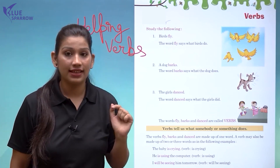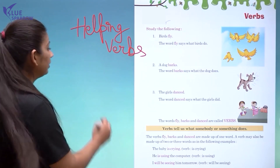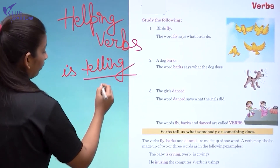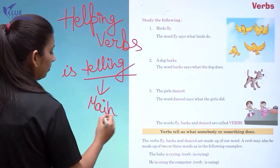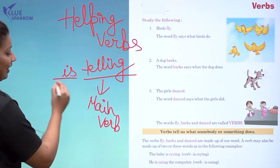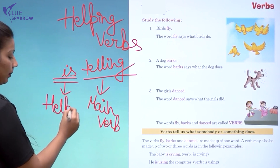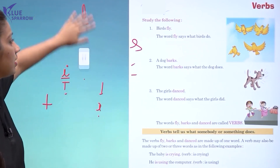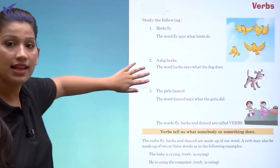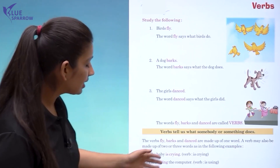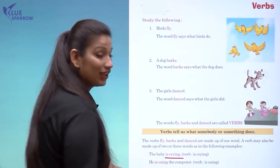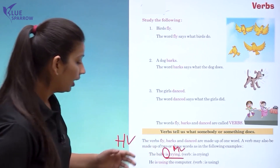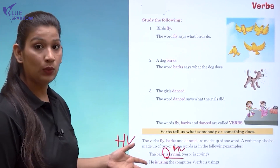There are some verbs which do not have a main impact on the sentence but they help complete the sentence. They are called helping verbs. For example, in 'Rajesh is telling a lie,' both 'is' and 'telling' are verbs. 'Tell' is the main verb, and 'is' is a helping verb. 'The baby is crying' — 'is' is the helping verb and 'crying' is the main verb. 'He is using the computer' — 'using' is the main verb, 'is' is the helping verb.